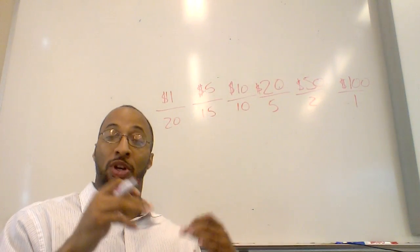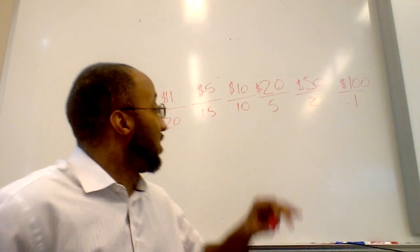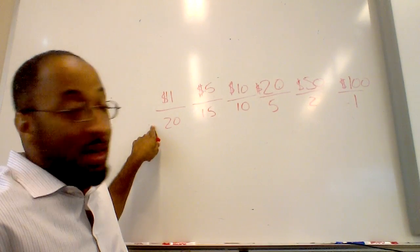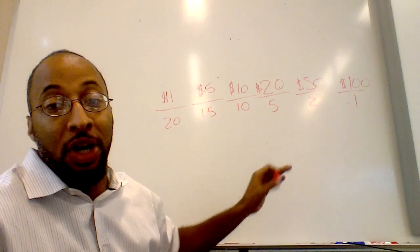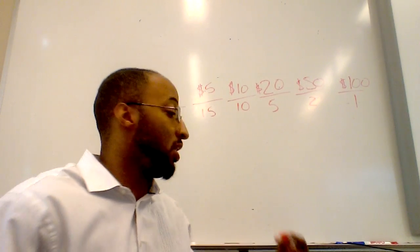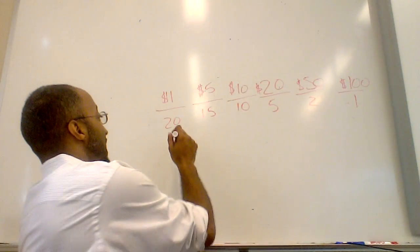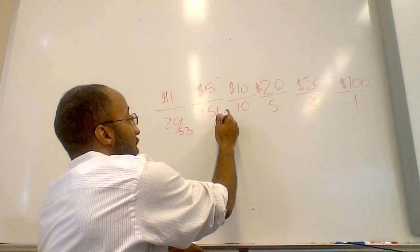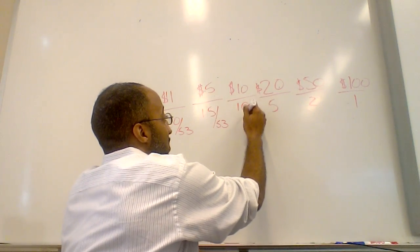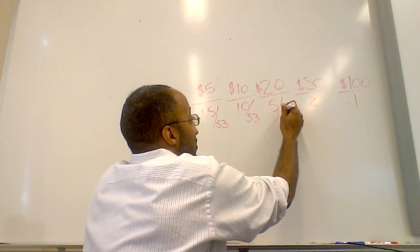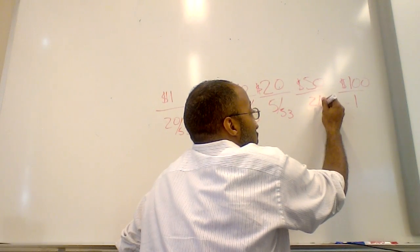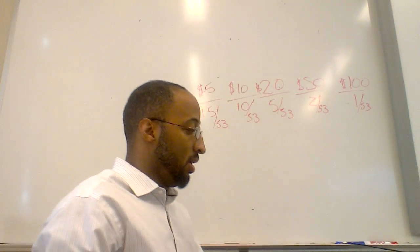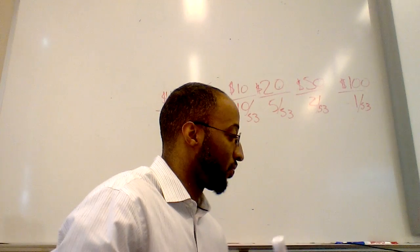Now we're going to do like we did with the die. We are going to take each occurrence and multiply it by the probability of it happening, and then we are going to take the sum to figure out what the expected value is. So right here we have 20 over 53, 15 over 53, 10 over 53, 5 over 53, 2 over 53, and 1 over 53.